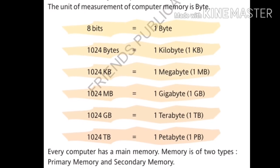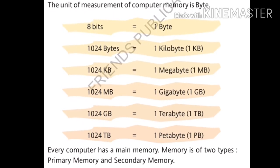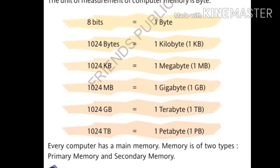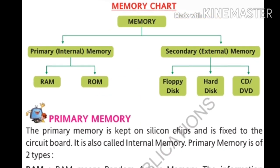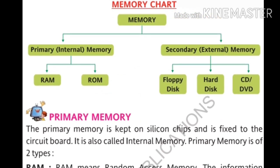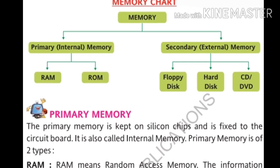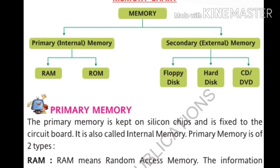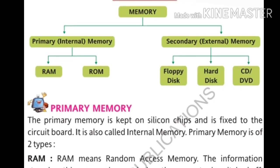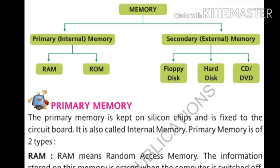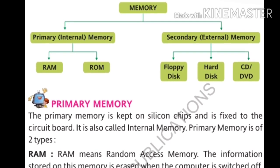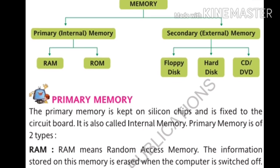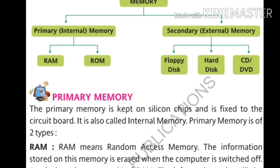Every computer has a main memory, and this memory has two parts: primary memory and secondary memory. Now look at this memory chart. Memory is divided into two parts — primary or internal memory, and secondary or external memory. Primary memory is further divided into two parts: RAM and ROM. Secondary memory is divided into three parts: floppy disk, hard disk, and CD or DVD.